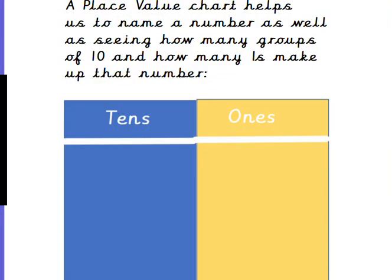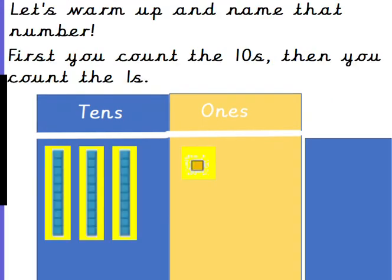A place value chart helps us to name a number, as well as seeing how many groups of 10 and how many 1's make up that number. We've done lots of work on that this week in class. Let's warm up and name that number. Remember what we did last week? First you count the 10's, then you count the 1's. What number is on the board?